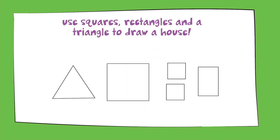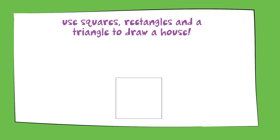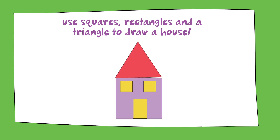Now let's use three squares, one rectangle, and one triangle to draw a house. Begin by drawing one big square. Next, draw a triangle on top of that square — that's the roof. On the inside of our big square, draw two small squares on the top left and right-hand side and a rectangle below. You've just made the windows and the door. Now color in your house however you wish — I chose purple.